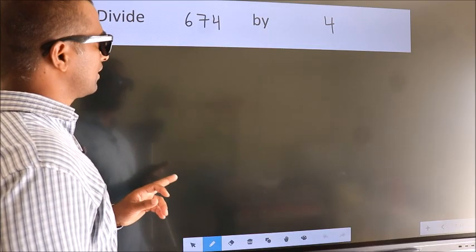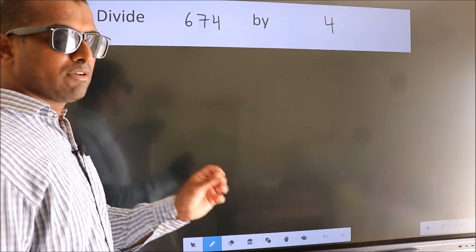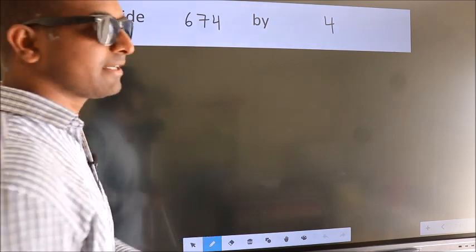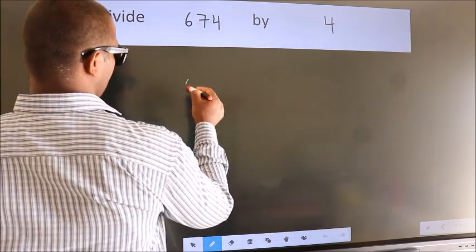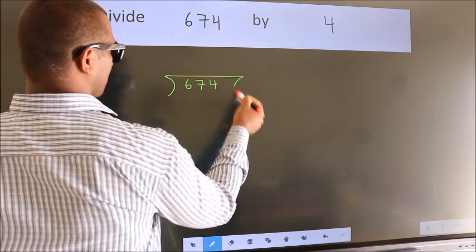Divide 674 by 4. To do this division, we should frame it in this way: 674 here, 4 here.